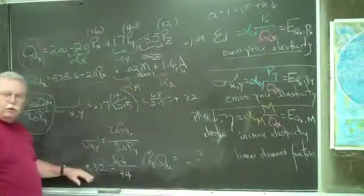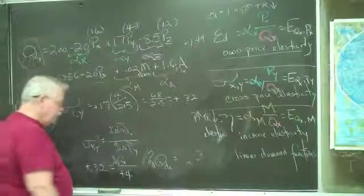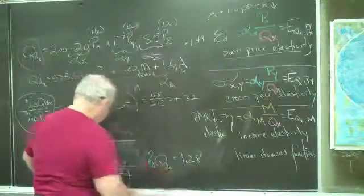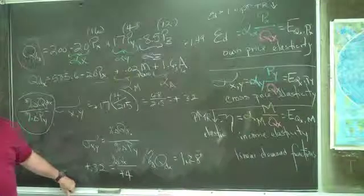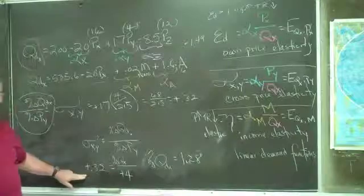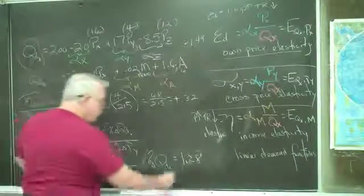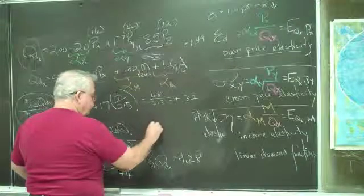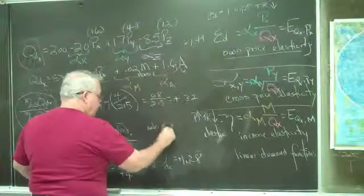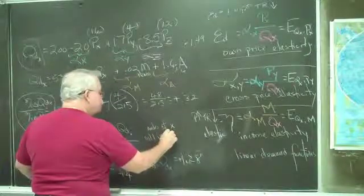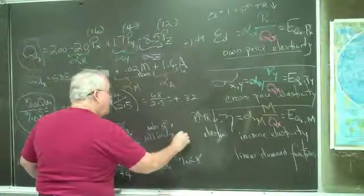And we're just going to cross multiply there, right? What do you get? About 1.28. Is it a positive number or a negative number? I think it is positive. Positive. So positive times a positive, plus 1.28, sales of x will increase how much? 1.28%.